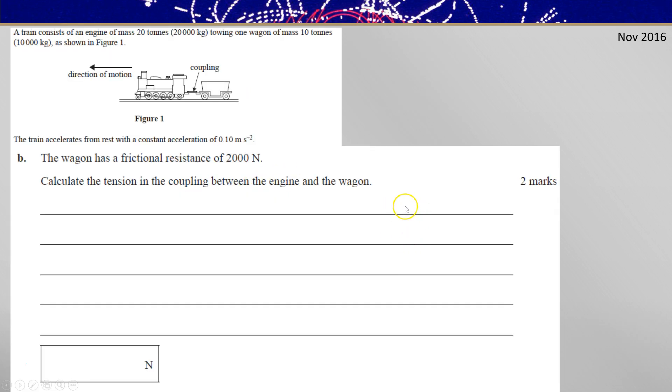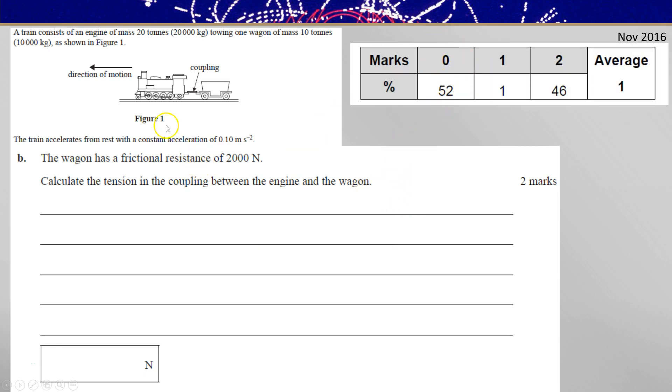The second part was much worse. More than half didn't score a mark. It says the wagon has a frictional resistance of 2000 newtons. So that's the wagon at the back here and calculate the tension in the coupling between engine and wagon.